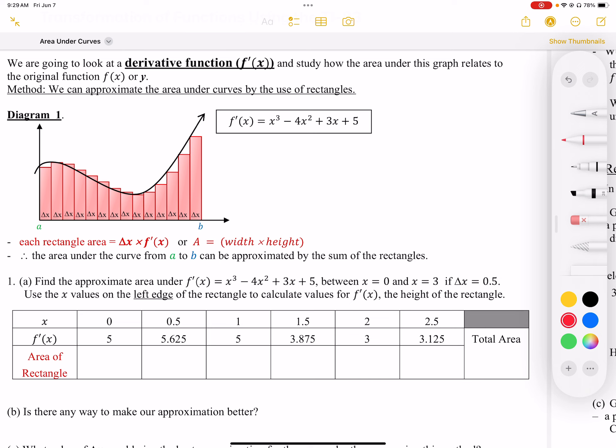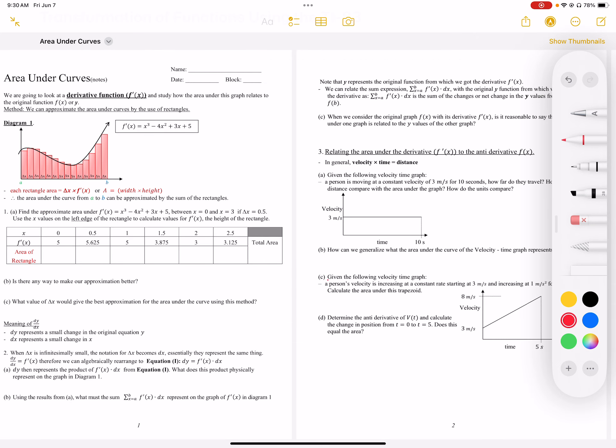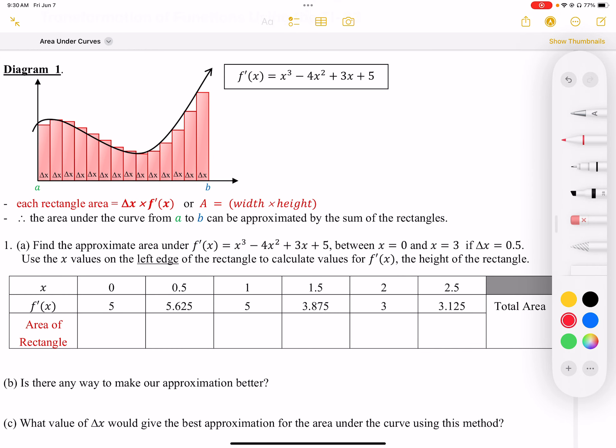For the first rectangle, we have the height of 5, and we've chosen the width to be 0.5, so the area is 2.5 square units. In the second rectangle, we have a height of 5.625 when we plug in 0.5, and here we're using the left edge height.